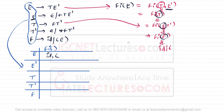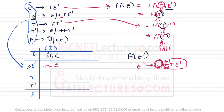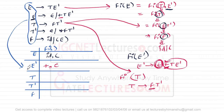Now let's find FIRST(E'). The production is E' → epsilon | +TE'. We can clearly see that '+' is a first symbol here, and because epsilon is also a production, FIRST(E') = {+, epsilon}. For FIRST(T): T → FT', and FIRST(F) = {id, (}, so FIRST(T) = {id, (}.